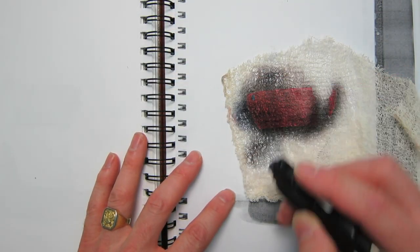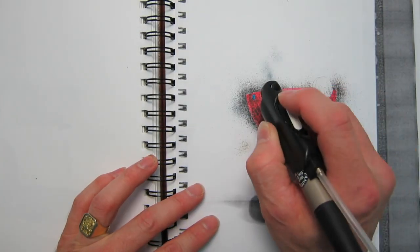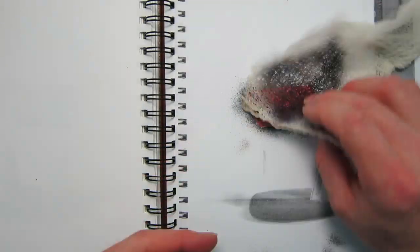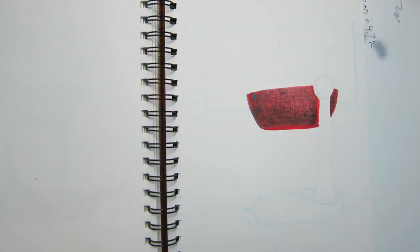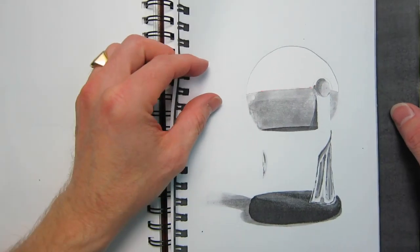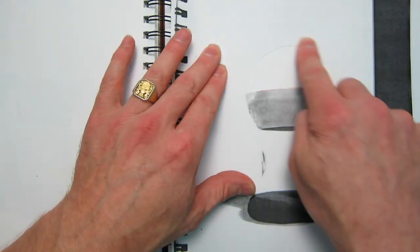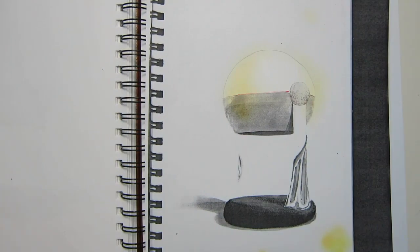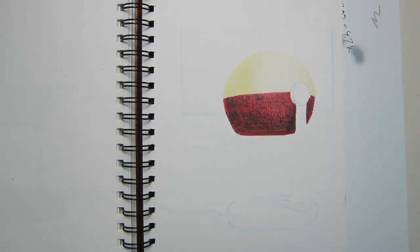I put some cheesecloth down and I airbrush through that to get a nice texture for the fabric that covers the speaker. Next I'm going to lay in some nice warm tones for the top of the globe to indicate that the light is soft and shining through the top part of the sphere.